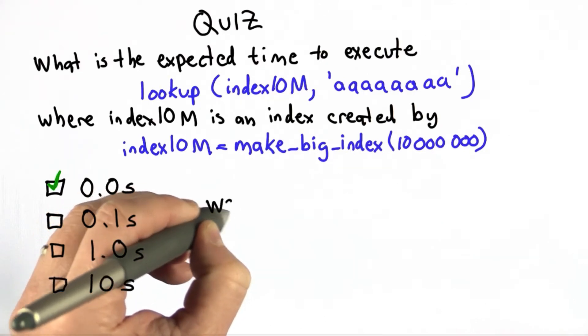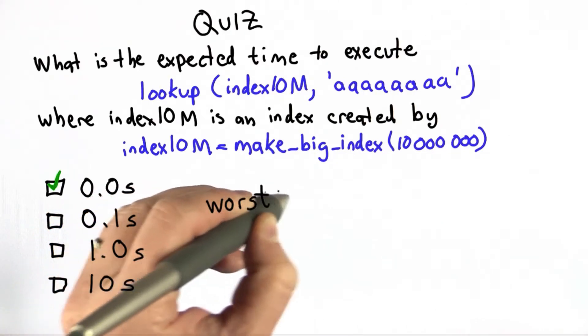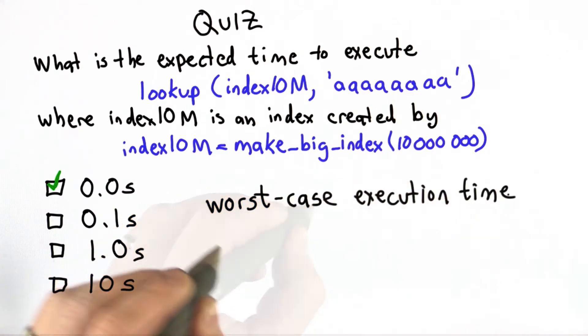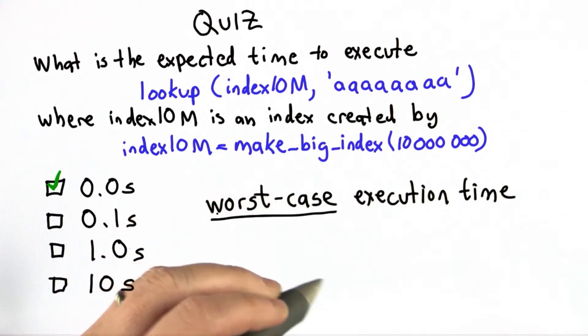What we usually care about when we analyze programs is what's called the worst case execution time. And that's the case where the input for a given size takes the longest possible time to run.